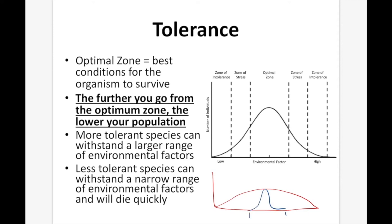For example, if this factor were temperature, a less hardy species might survive between 10 and 30 degrees Celsius, whereas a more hardy species could survive everywhere from zero up to 50 degrees Celsius.